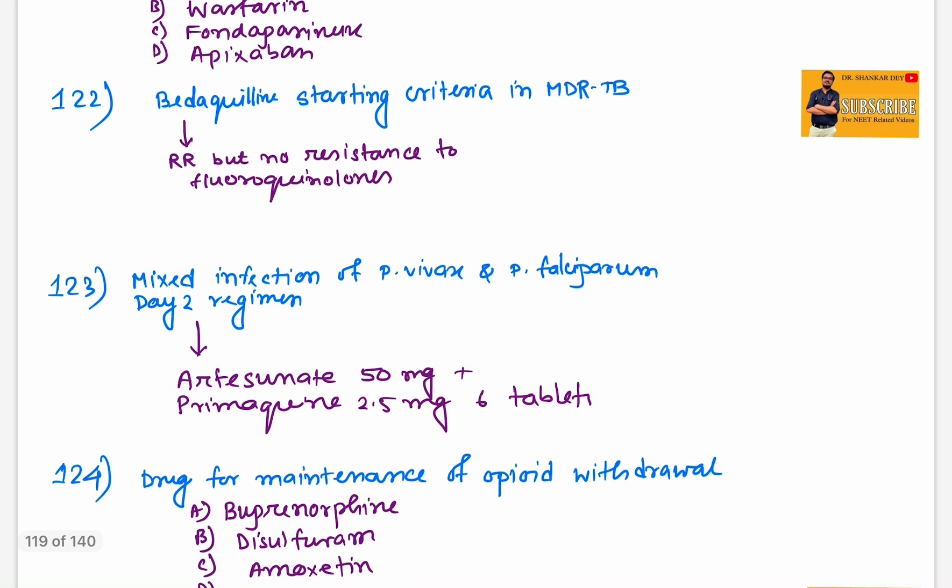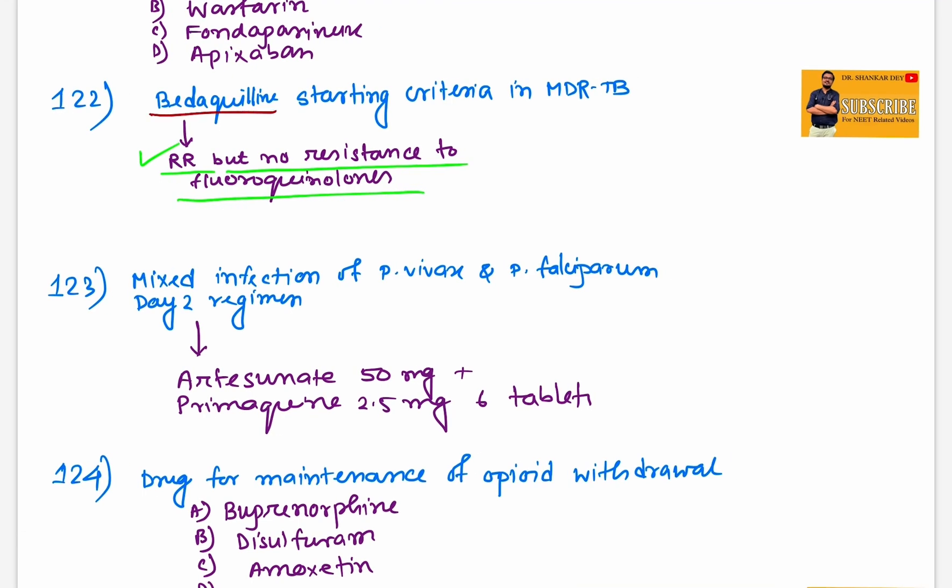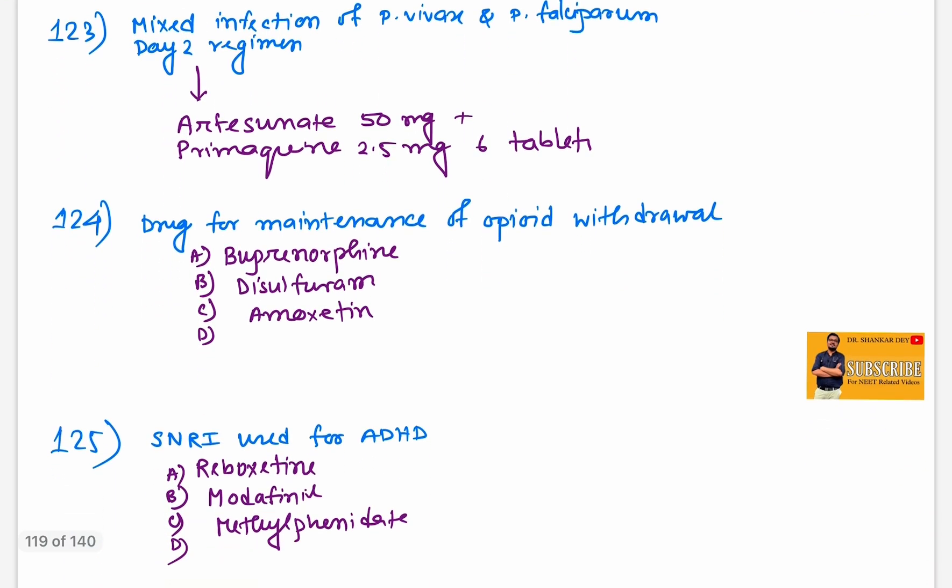Question 122: Beta-lactam starting regimen in MDR-TB. There should be rifampicin resistance but no resistance to fluoroquinolones. Answer is rifampicin resistance, no resistance to fluoroquinolones. Mixed infection of Plasmodium vivax and falciparum.